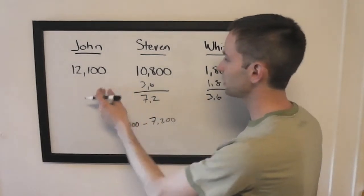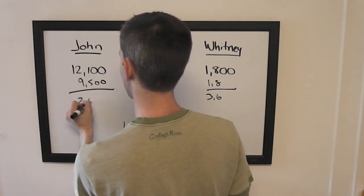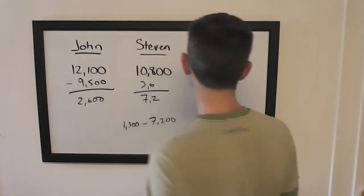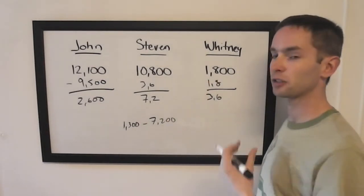To cover Stephen, John's going to need to wager 9,500. If he gets it wrong with this wager, he'll be left with 2,600, which is more than what Whitney has, but she could double up and pass John.